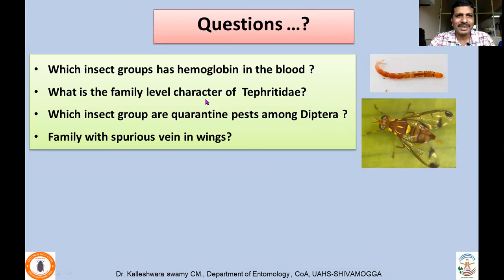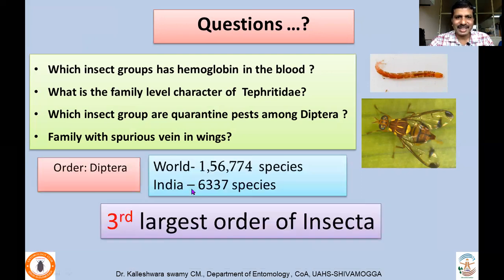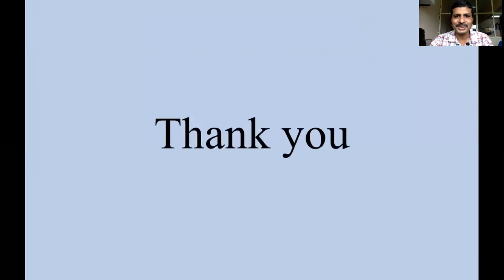To conclude, a few review questions: Which insect group has hemoglobin in the blood? What is the family-level character of Tephritidae fruit flies? Which dipteran groups are considered quarantine pests? Which family has a spurious vein on the wings? Worldwide, 56,774 species of Diptera have been described; in India, 6,337 species. Diptera is the third largest order of Insecta, after Coleoptera and Lepidoptera. Thank you.